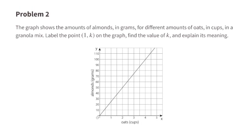Problem number 2. The graph shows the amounts of almonds in grams for different amounts of oats in cups in a granola mix. Label the point (1, K) on the graph, find the value of K, and explain its meaning.